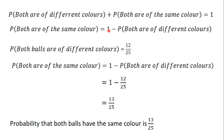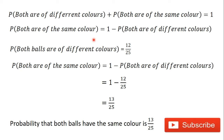We can see clearly that we got the same answer as in the previous video, confirming that this method is simpler. One minus the probability that both balls are of different colors gives the probability that both balls are of the same color, and vice versa. Thank you for watching. Subscribe to this channel for more videos. In the next video, we are going to solve a question where the balls are selected one after the other without replacements.